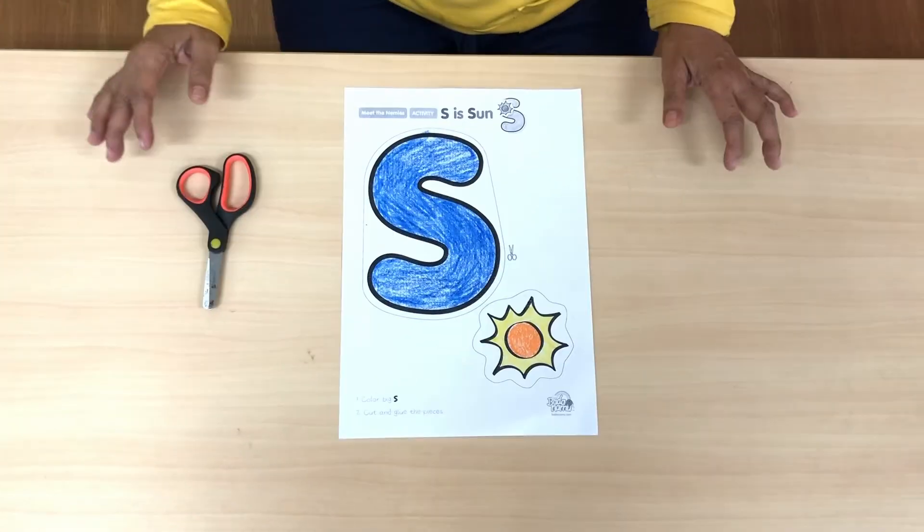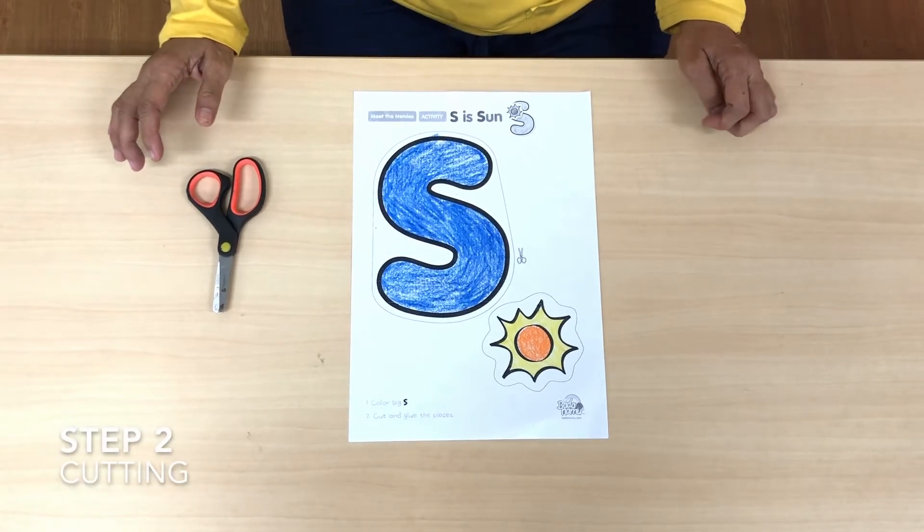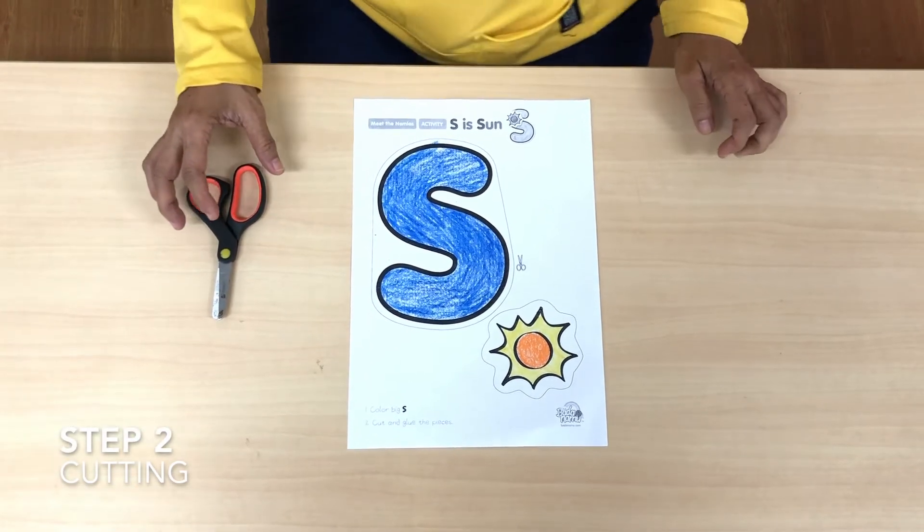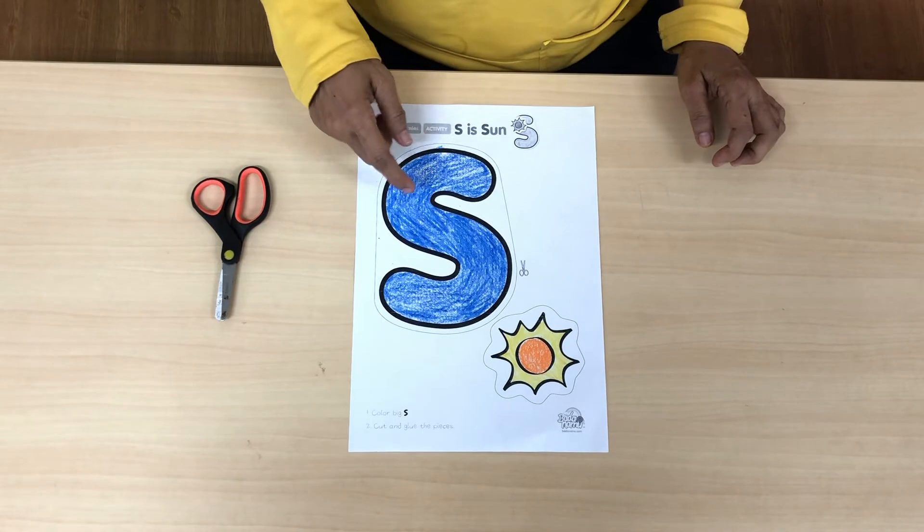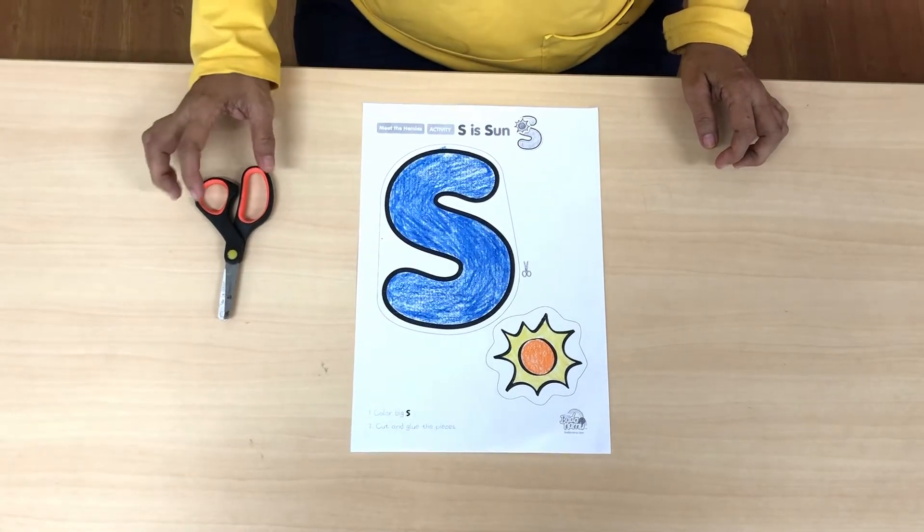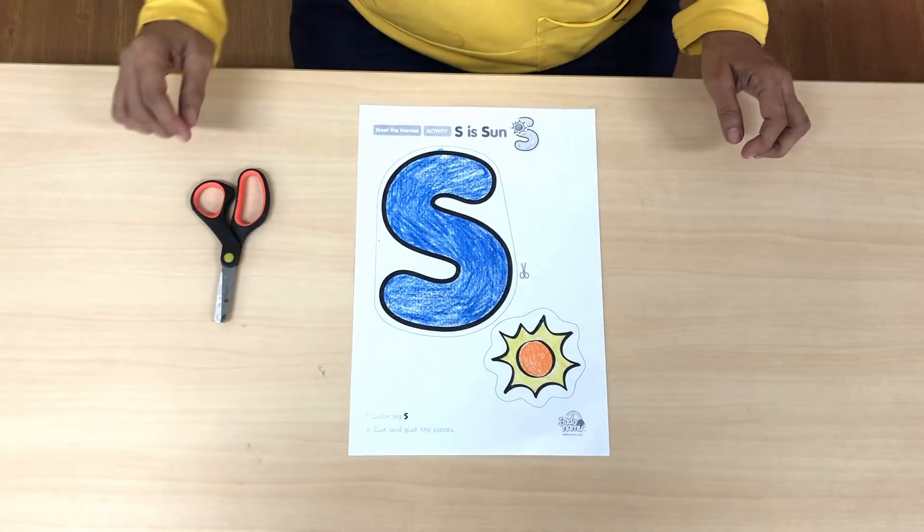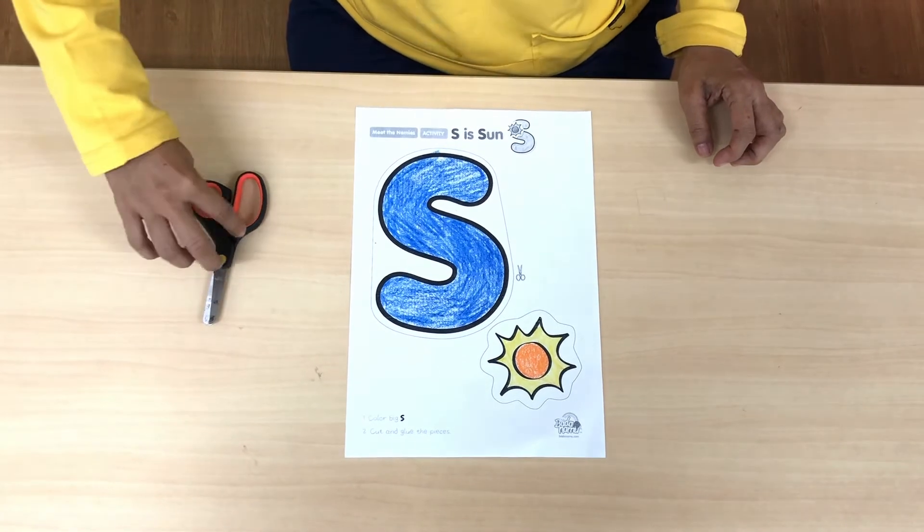Go! Step 2, cutting. Now we will cut the S and sun. Remember how to hold your scissor nicely like this. Look, this is how, and now start cutting nicely.